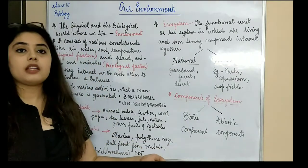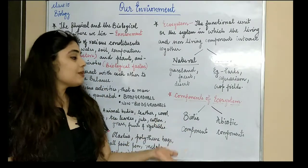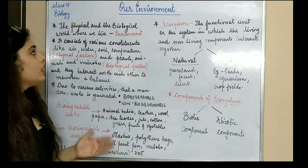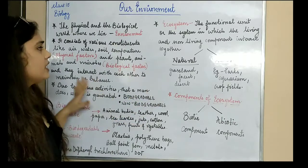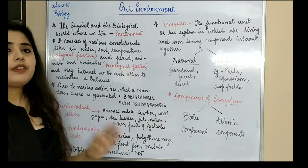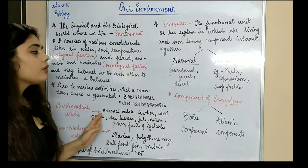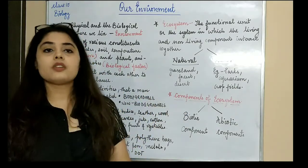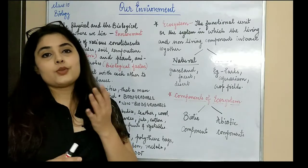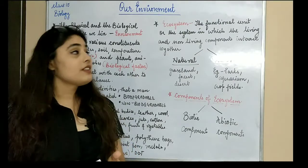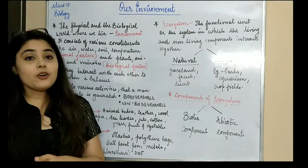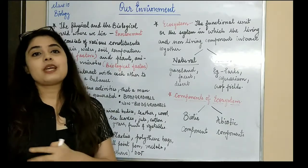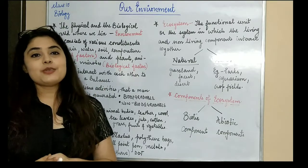There is further categorization into herbivores, carnivores, and omnivores, which will be covered in detail in the next video on how the ecosystem functions. I hope everything in this video is clear — it is a very simple and easy video. If you have any doubts regarding this chapter or any other chapter, you can definitely comment. Stay tuned for the next video, share it as much as possible, subscribe to my channel, like my videos, and click the bell icon to get notified first.